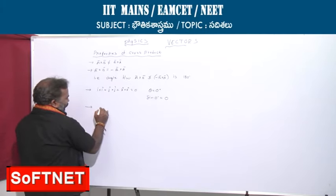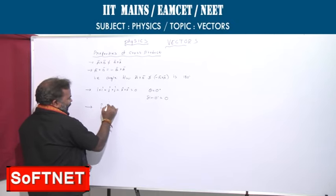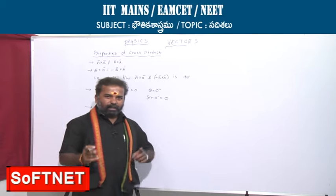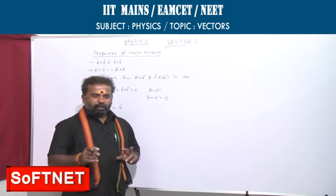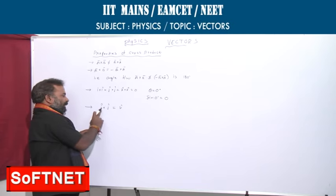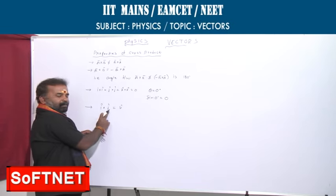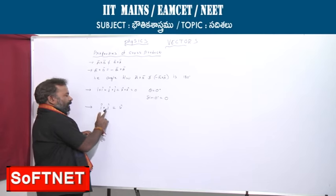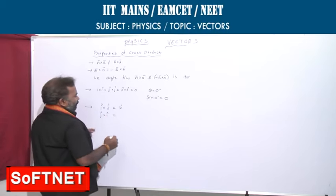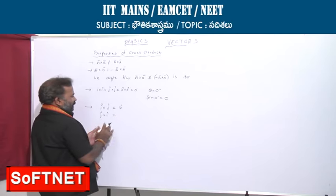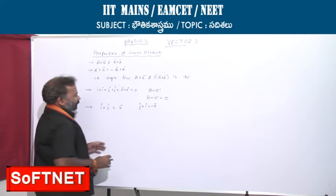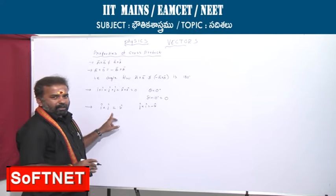If you go for î cross ĵ, the result is k̂. Because the cross product of two vectors is a vector perpendicular to both. k̂ is perpendicular to î as well as ĵ. Now, ĵ cross î is minus k̂, because cross product does not obey the commutative law. A bar cross B bar is not equal to B bar cross A bar; it equals minus of B bar cross A bar.